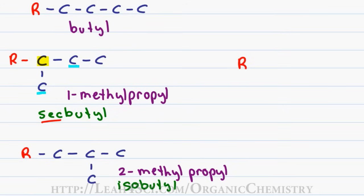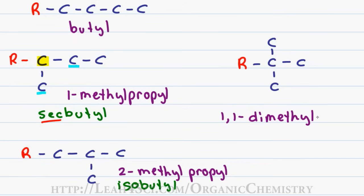Last but not least, you can have a 4-carbon substituent where one carbon is attached to the parent chain and the other 3 carbons are all attached to that first carbon. The long name is 1,1-dimethylethyl, but you can also call it tert-butyl — because the carbon directly attached to the parent chain has 3 carbons coming off it within the substituent.